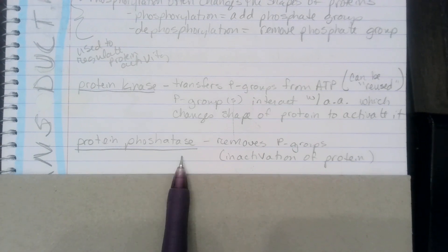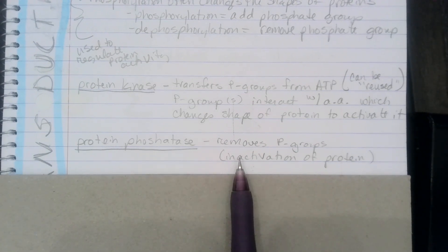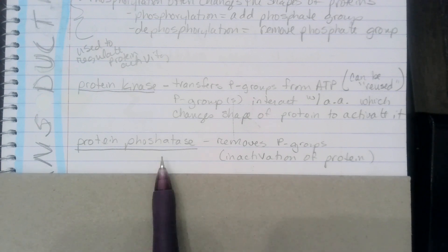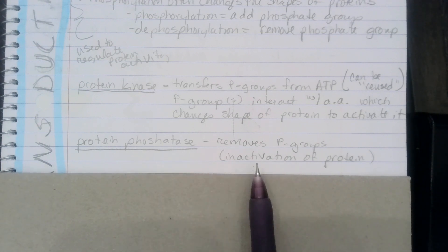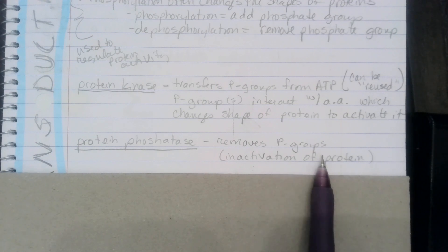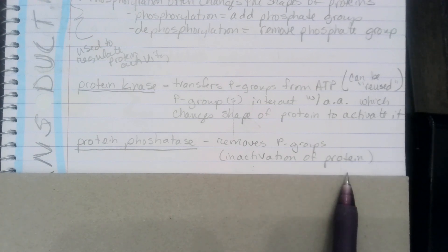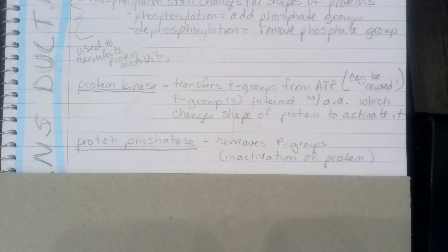Protein phosphatase is an enzyme that removes phosphate groups. The removal of phosphate groups is going to inactivate the protein.